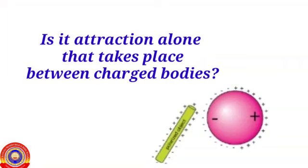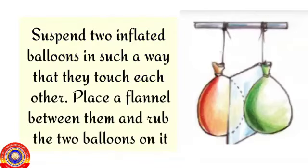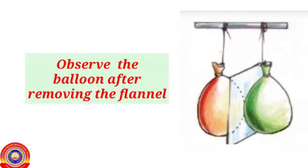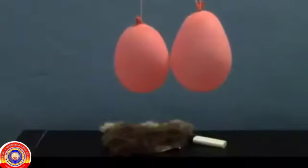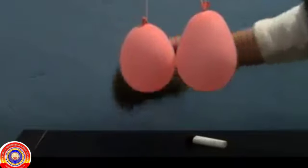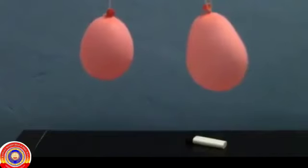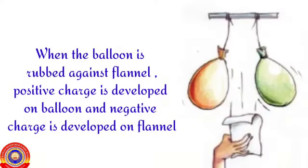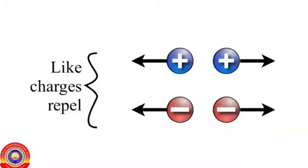Is it attraction alone that takes place between charged bodies? Let's find out. Suspend two inflated balloons so that they touch each other. Place a flannel between them and rub the two balloons on it. Observe the balloons after removing the flannel. When the balloon is rubbed against flannel, positive charges develop on the balloon and negative charges develop on the flannel.